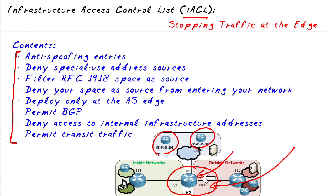Maybe we have some routers and other devices inside our company that we don't want the rest of the internet to take advantage of. We may want to deny some source IP addresses — for example, hosts at 55.44.33.195 and .200 inside our network. Any packets trying to come in claiming they're from those source addresses are bogus, so we include deny statements for any IP addresses internal to our network.